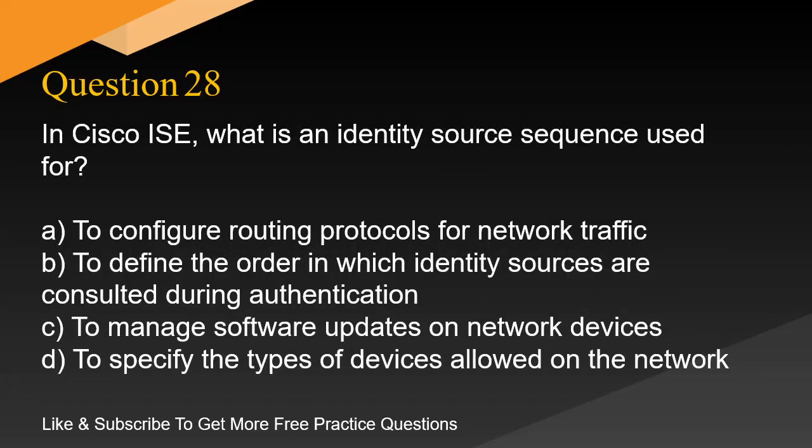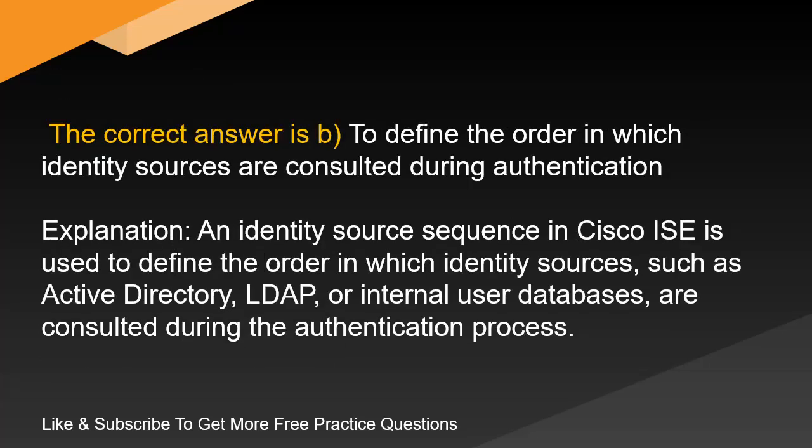Question 28. In Cisco ISE, what is an identity source sequence used for? A. To configure routing protocols for network traffic. B. To define the order in which identity sources are consulted during authentication. C. To manage software updates on network devices. D. To specify the types of devices allowed on the network. The correct answer is B. To define the order in which identity sources are consulted during authentication.